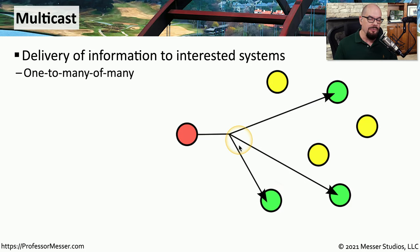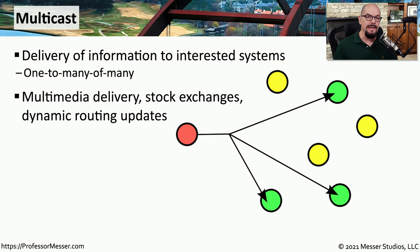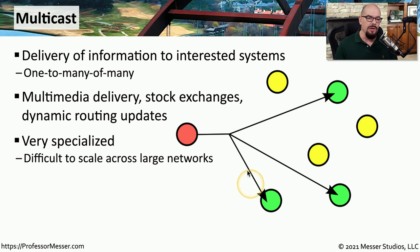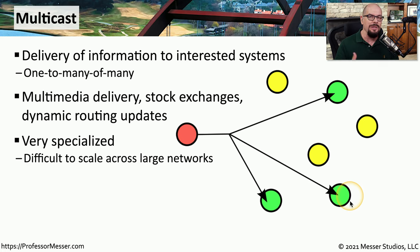Multicasts allow you to send a single frame that would only be seen by devices that are interested in receiving that information. Other devices that aren't involved in that communication are not affected. We often see multicasts used for multimedia communication, stock ticker updates, or routing protocols that intelligently update other routers using multicast. Because of the specialization required to only send traffic to interested parties, this technology doesn't tend to scale with larger networks and must be very carefully engineered.